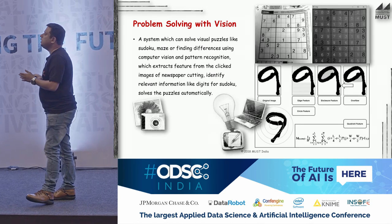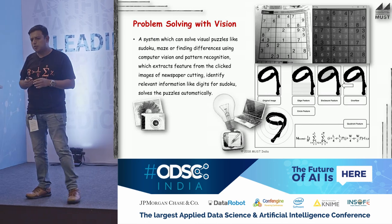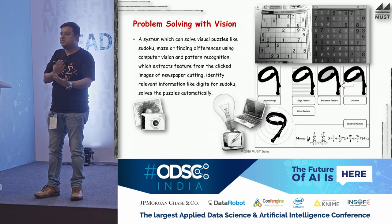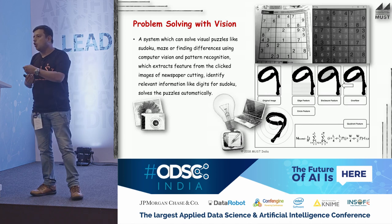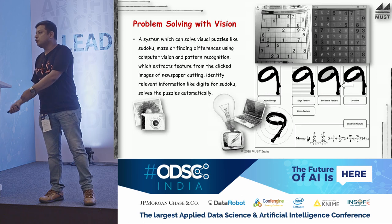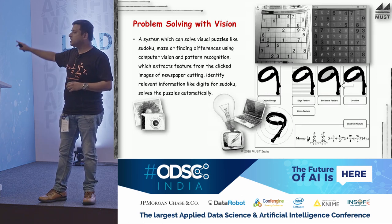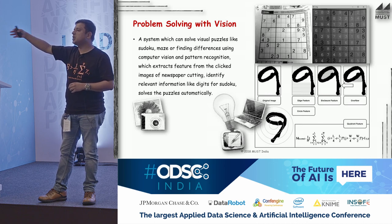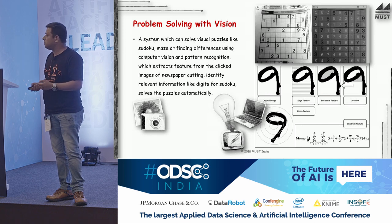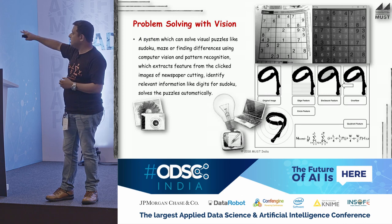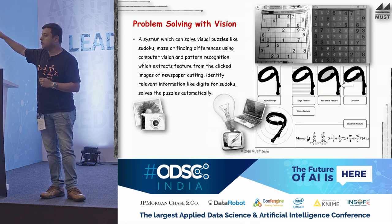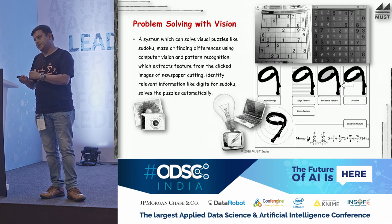Next is pure computer vision — problem solving using vision, like Sudoku puzzles, find-the-difference between two images, or solving a maze puzzle. No one will buy these solutions directly — no one wants a robot solving Sudoku for them. But these solutions can be applied for security purposes, like reading vehicle number plates, automating banner text reading, or understanding how humans think through visual problems.